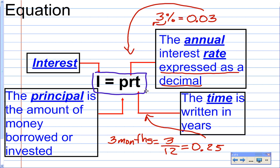So again, PRT just means the principal value times the rate times the time. So you're just multiplying three numbers together. And that will give you your interest. You have to make sure that the rate is a decimal, and that the time is in years.